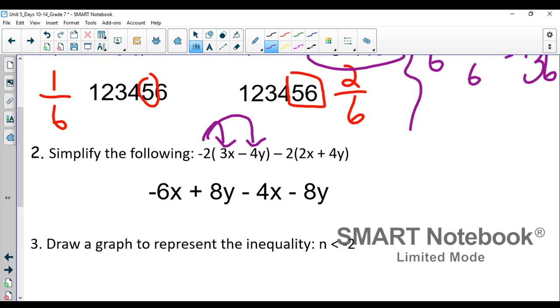If anyone made a mistake, this is most likely where it went. Negative two times three X is negative six X. Negative two times negative four Y is positive eight Y. The second piece here, we're distributing a negative two, negative two times two X and negative two times positive four Y. So after we distribute, we have this line right here.